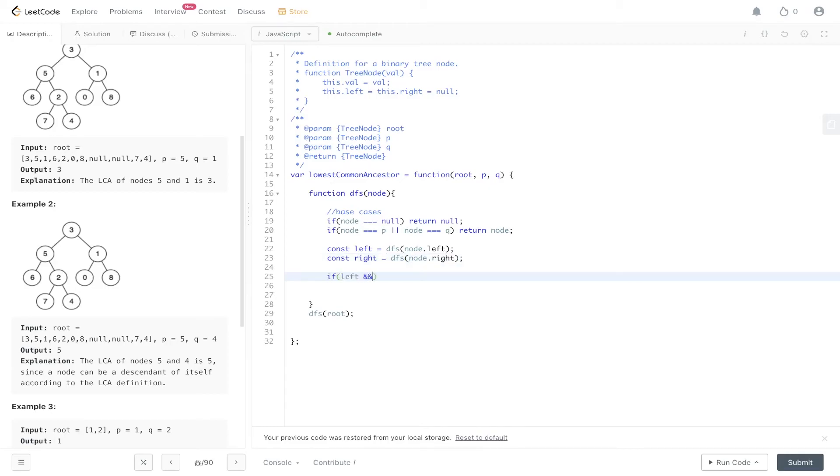Then we do the check. If left and right are available, if both have been found, return the current node as the parent. At this point we're at 3 and we've traversed the entire tree. 5 has returned up a value, right has returned up a value that's not null. So we can return that node, which is 3.